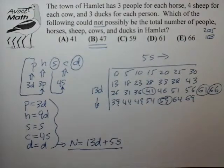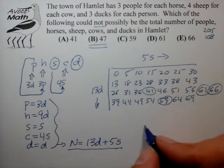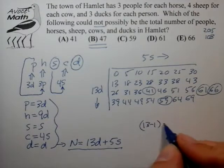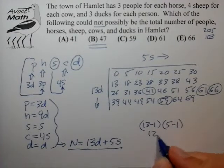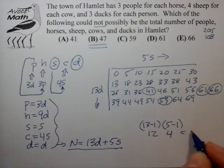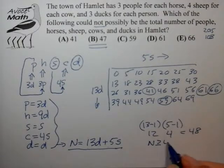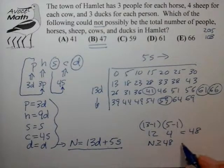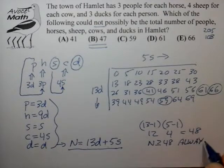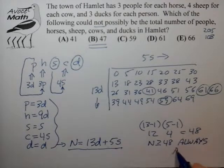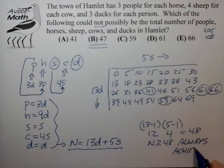And we could have gotten to this answer a little quicker using the methods that we learned from the Chicken McNugget theorem. So go back and check that if you want. But you can basically deduce from the coefficients of this equation that the critical number that we're looking for is 13 minus 1 times 5 minus 1, which is 12 times 4, which equals 48. And that's significant because for N greater than or equal to 48, we know that we always can achieve that for this Diophantine equation. Always achievable.